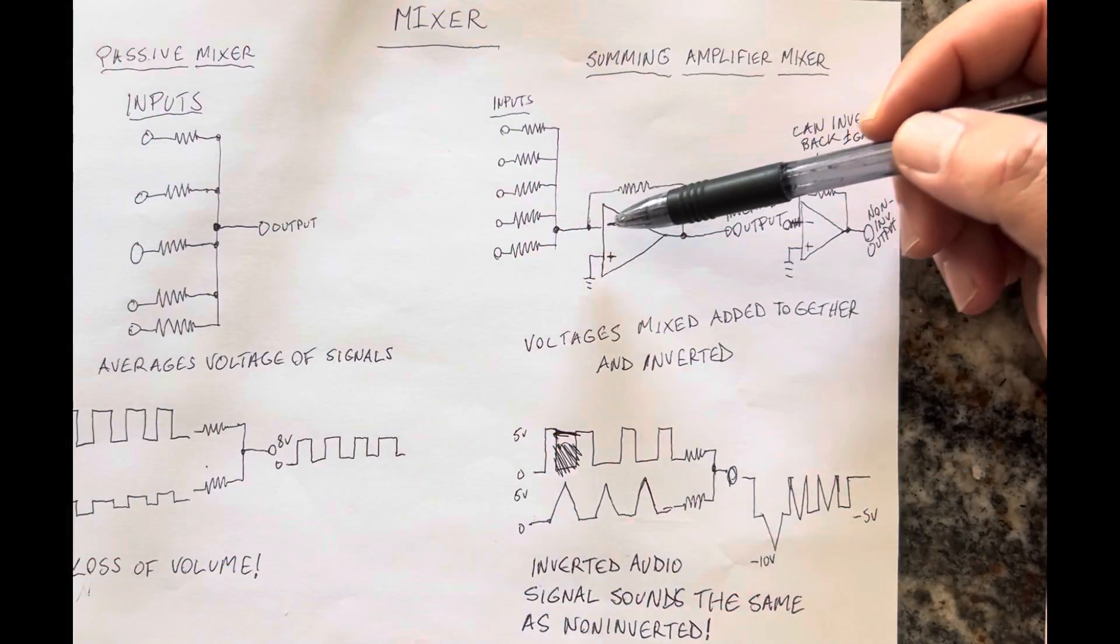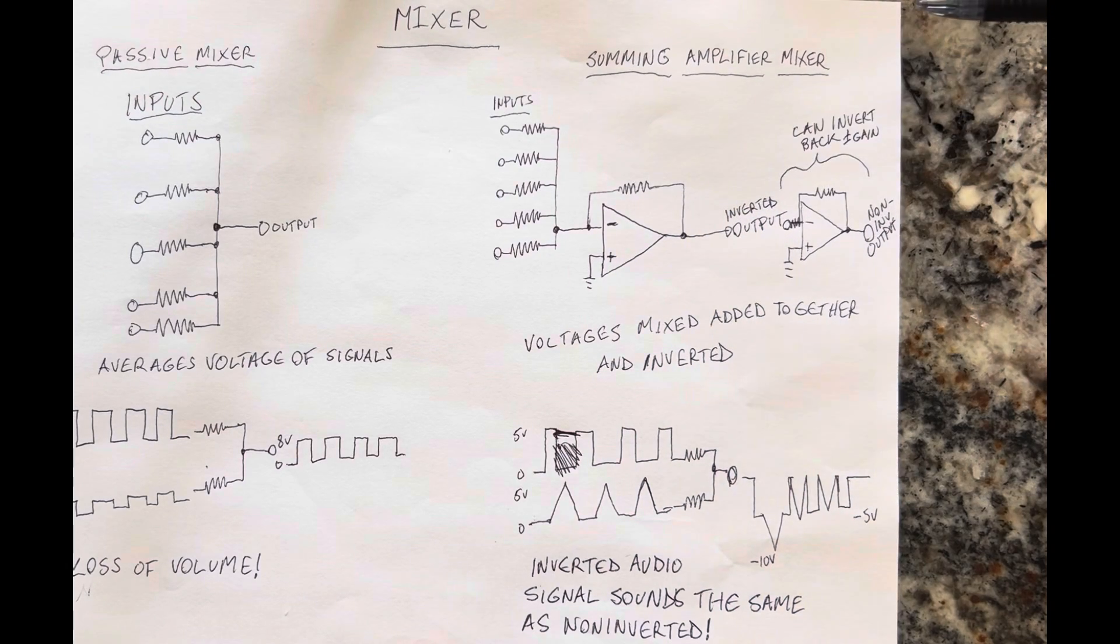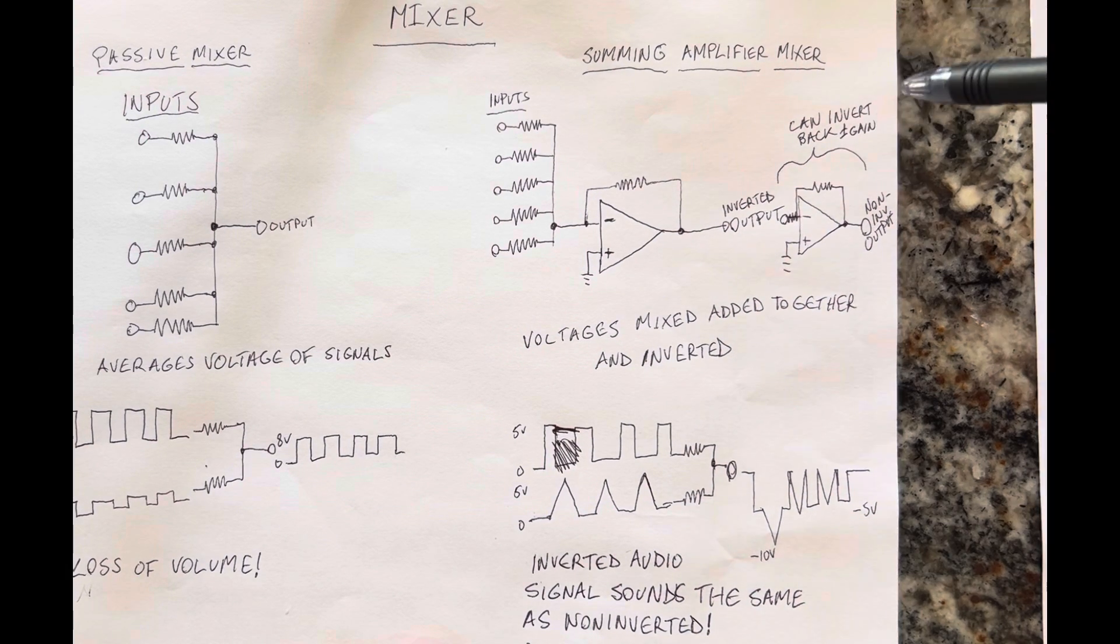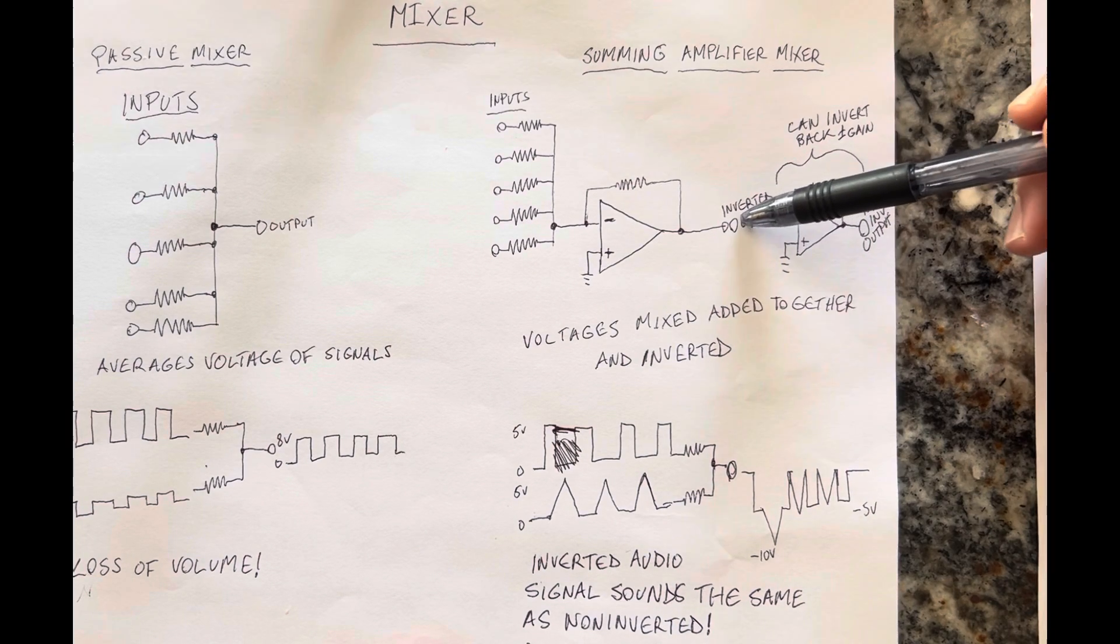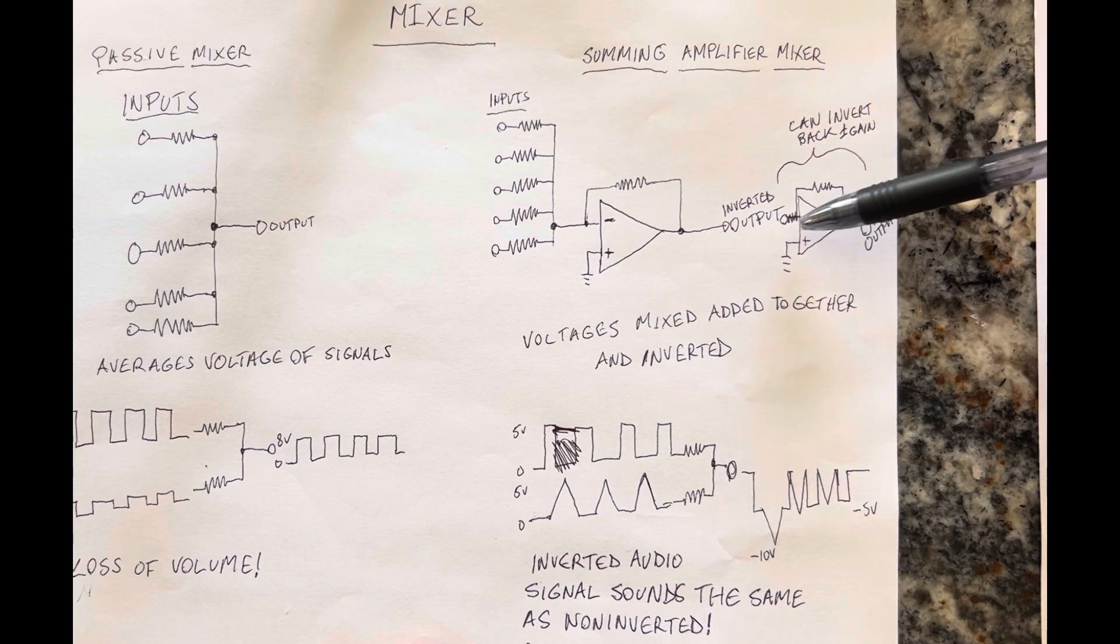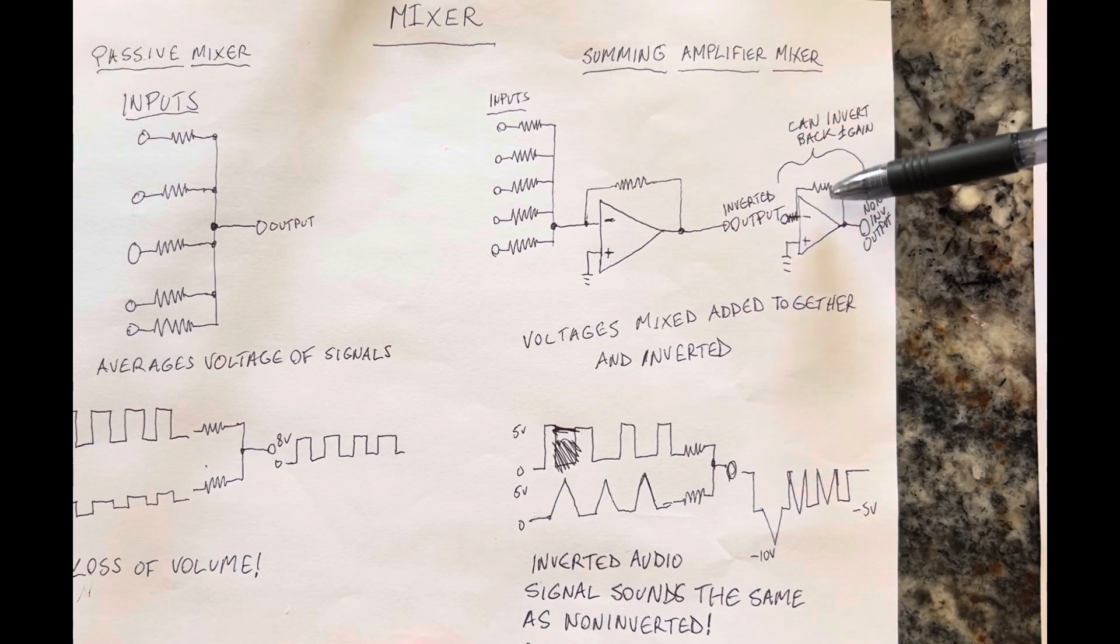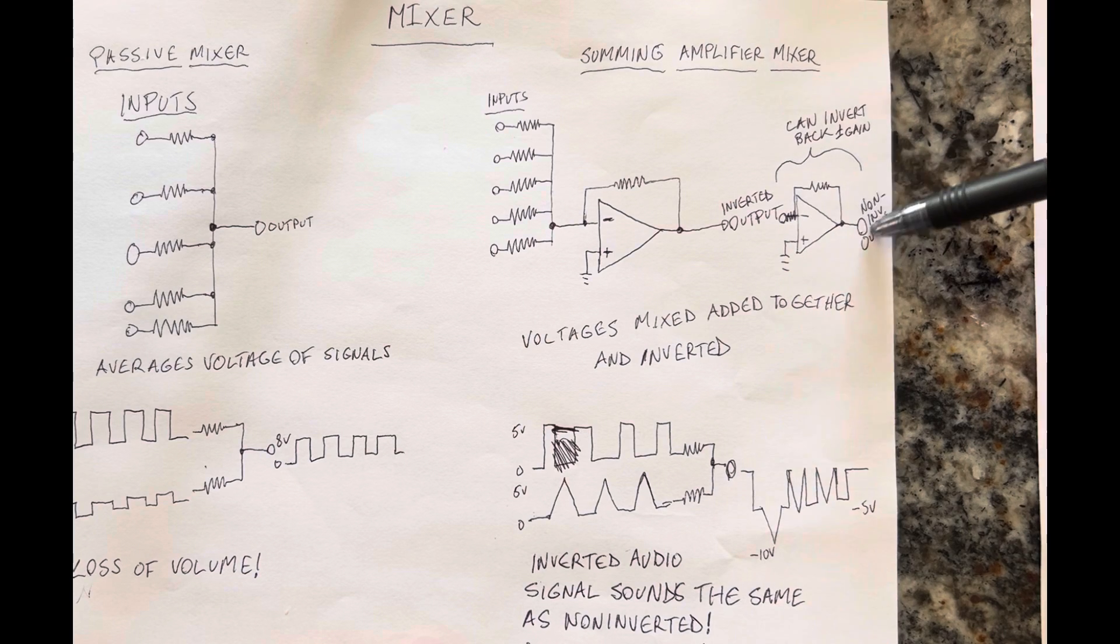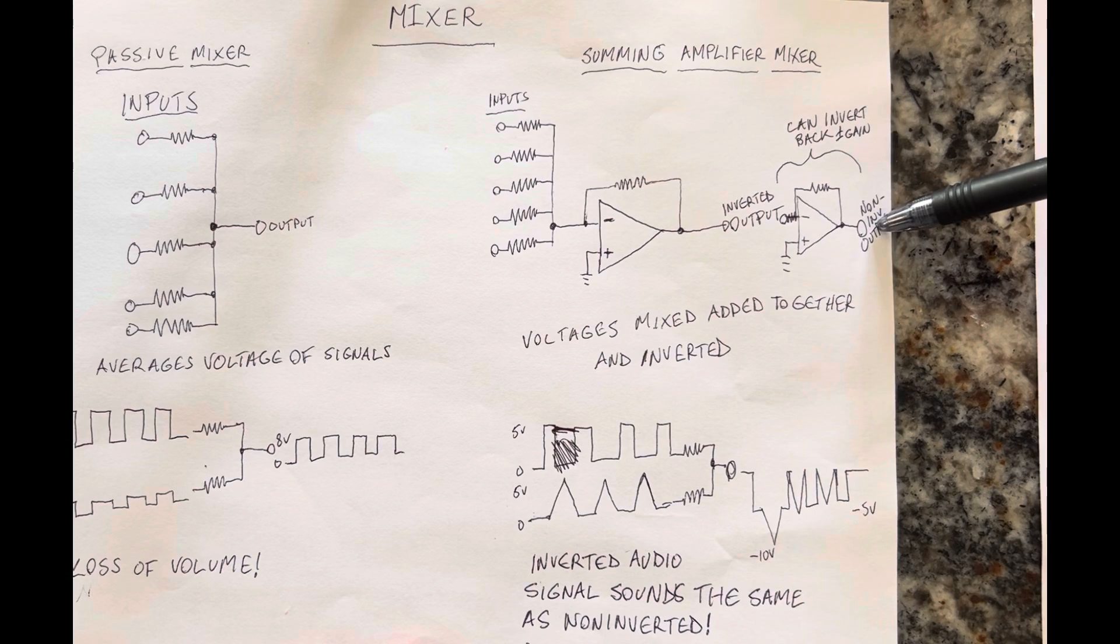The only caveat to this is it's inverting. So it gives you an inverted version of your output. And in audio, that really doesn't matter, but in some cases, in some applications, it does. So the solution for that is you just put it through another inverting op-amp, and just invert it back, and you can add gain to it by increasing the ratio of this resistor to this resistor, or you could just leave it alone, a unity gain. And basically, that is your mixer circuit.